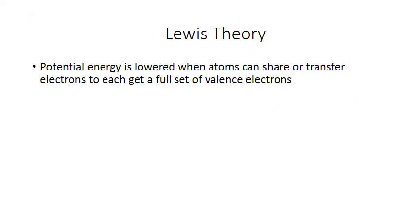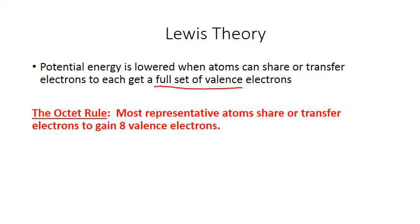This brings us back to Lewis theory. Chemical bonds form when potential energy is lowered between atoms. According to Lewis theory, that potential energy is lowered when atoms can share or transfer electrons to each get a full set of valence electrons. And as we've just seen with the periodic table, for most elements a full set of valence electrons is eight. This gives us the fundamental rule for Lewis theory — it's called the octet rule. Most representative atoms share or transfer electrons to gain eight valence electrons. There are some exceptions, but the octet rule is our guiding principle to help determine how atoms combine into different compounds.